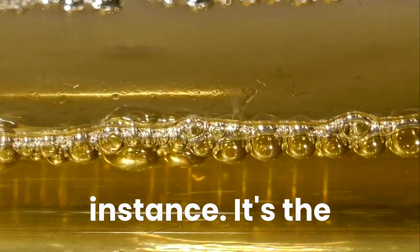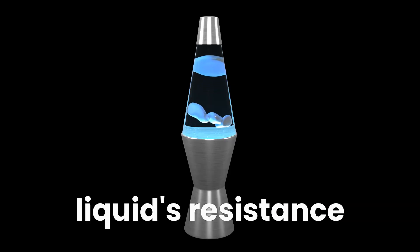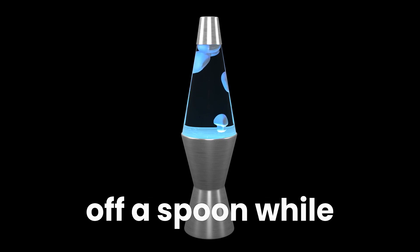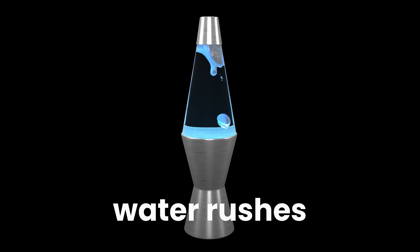Take viscosity, for instance. It's the measure of a liquid's resistance to flow, and it's what makes honey ooze lazily off a spoon, while water rushes in a torrent. In slow motion, these differences become a visual feast.